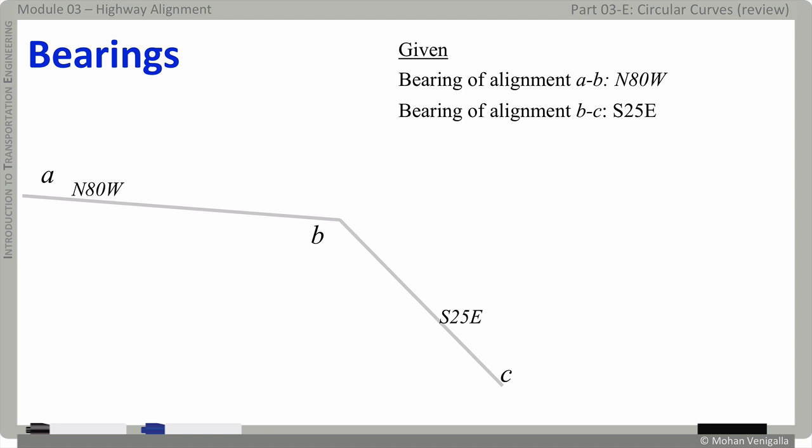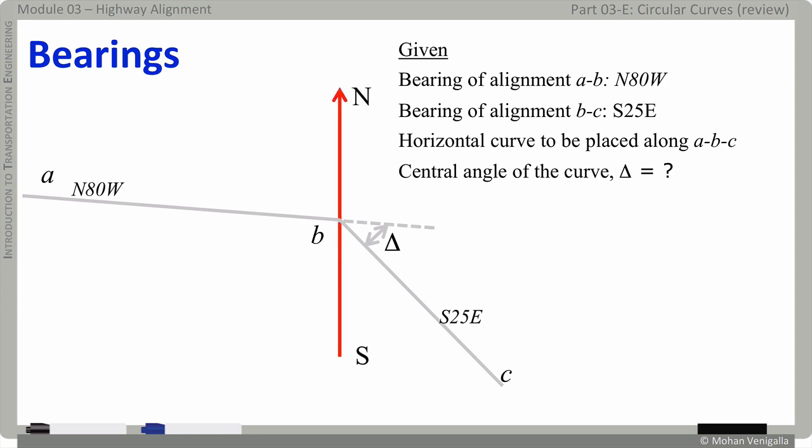And here presumably B will be your point of intersection PI and what you have to do is you have to design a circular curve for alignment A B C. How do you first compute the deflection angle which will also be your central angle of the curve delta? How do you compute that? Here is how let's say this is our north south line and this is our east west line.